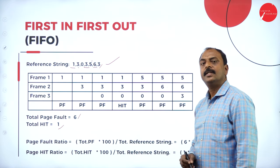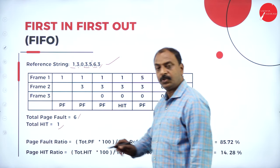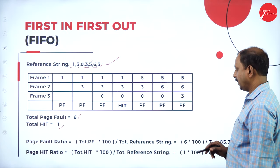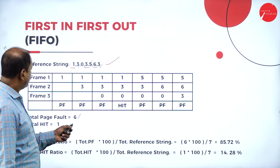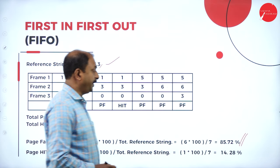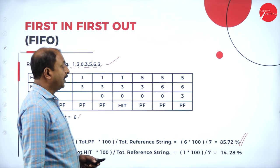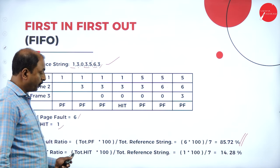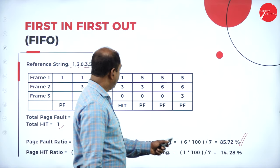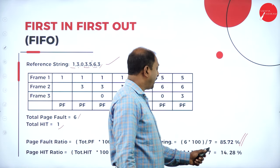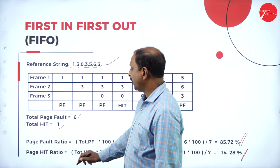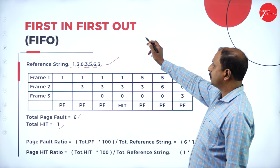To calculate page fault ratio and page hit ratio, the formula is: total page faults × 100 ÷ total reference strings. In this example there are six page faults: 6 × 100 ÷ 7 = 85.72% page fault ratio. For page hit ratio, there is one hit: 1 × 100 ÷ 7 = 14.28%. This is the page fault ratio and page hit ratio for the FIFO algorithm.